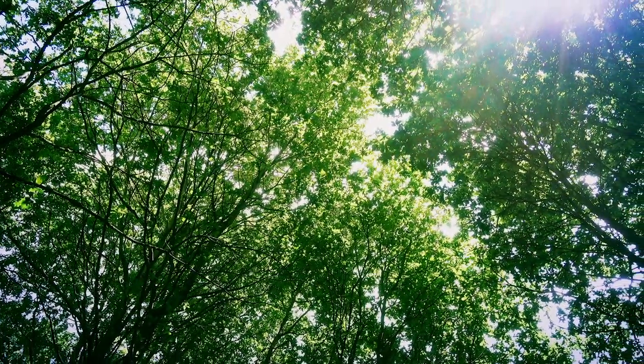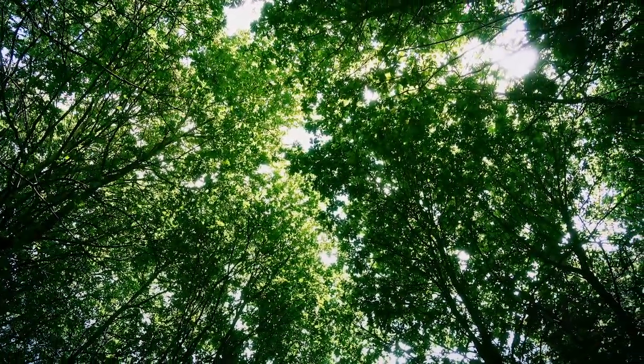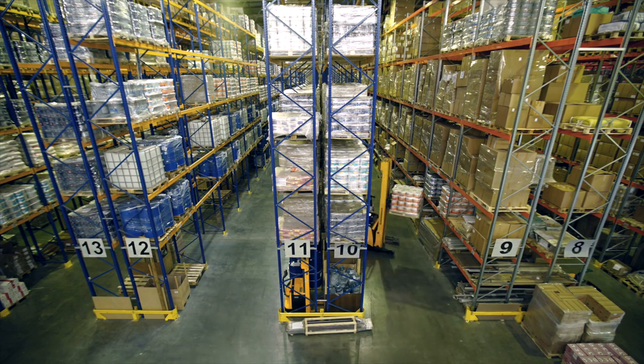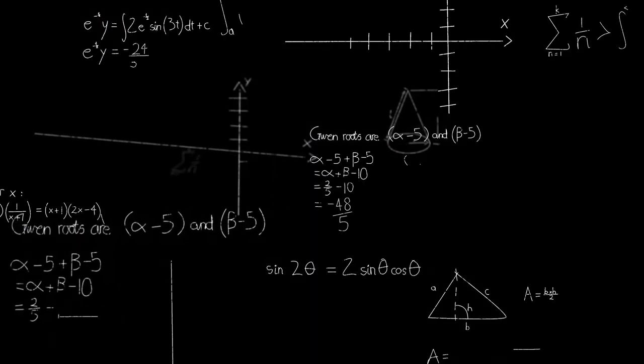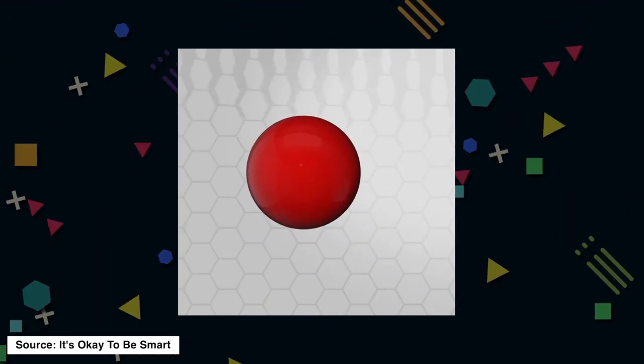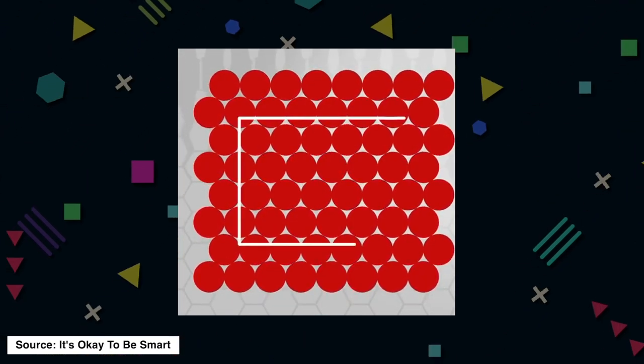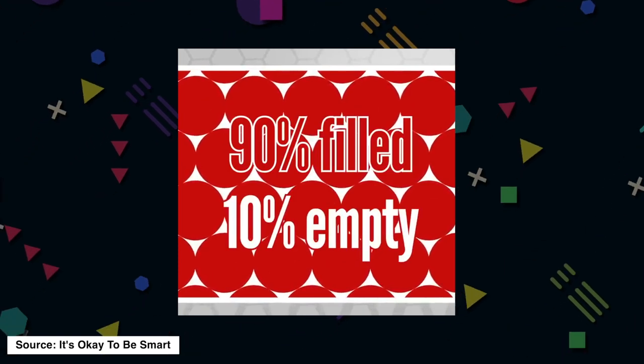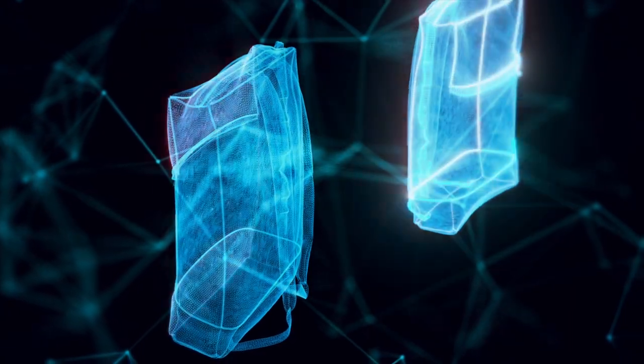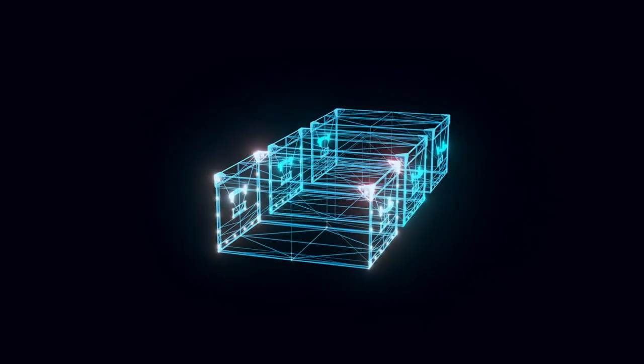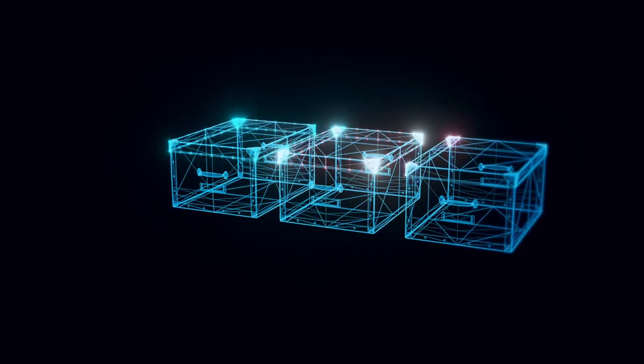So why does nature crave hexagons so much? It turns out it has something to do with packing efficiency. So basically, mathematics. Take a look at this: these are circles or cells arranged in rows and columns. Now, even with the best packaging, you can see the empty space. So if you want to pack together cells that are identical in shape and size so that they fill all of a flat plane...